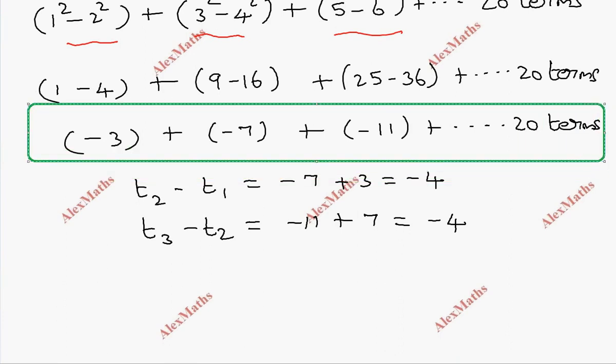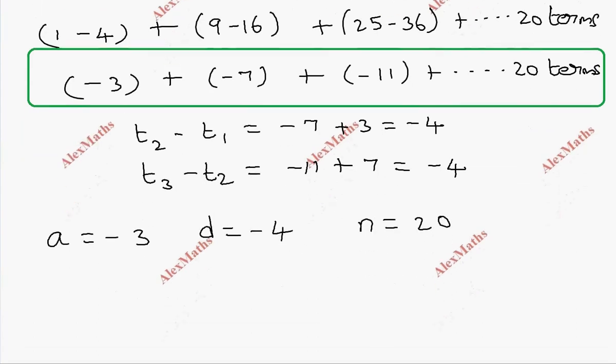First term a equals minus 3, common difference equals minus 4, n value equals 20.